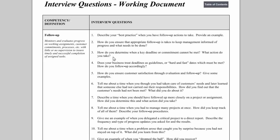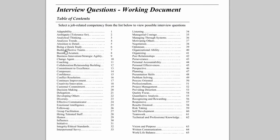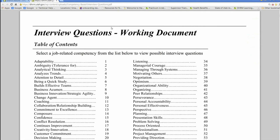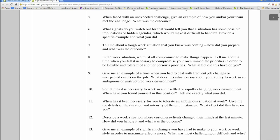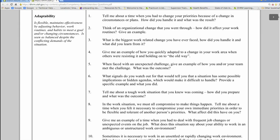The bottom line is: identify the behavioral competencies you're looking for, then use the table of contents to find possible questions. Is building effective teams important? If you're hiring for a management or supervisory role, it certainly might be. Is conflict resolution important? Is decision making? Based on the behaviors you've identified as relevant to the job, use this manual to identify possible interview questions. Here are some adaptability questions — for example: 'Tell me about a time when you had to change priorities because of a change in circumstances. How did you handle it and what was the result?'